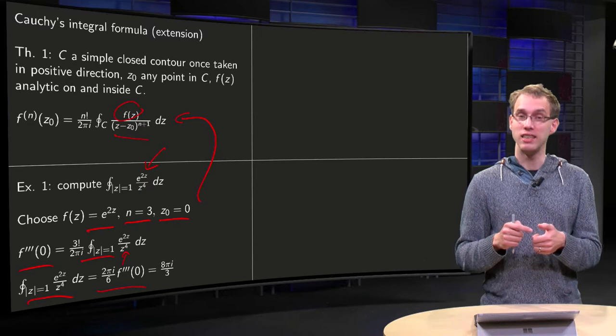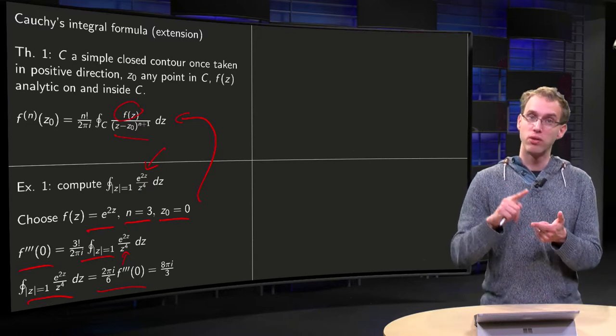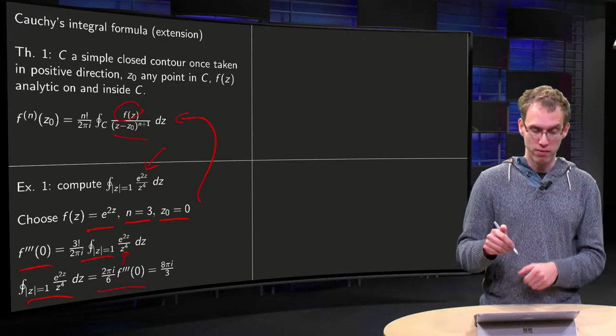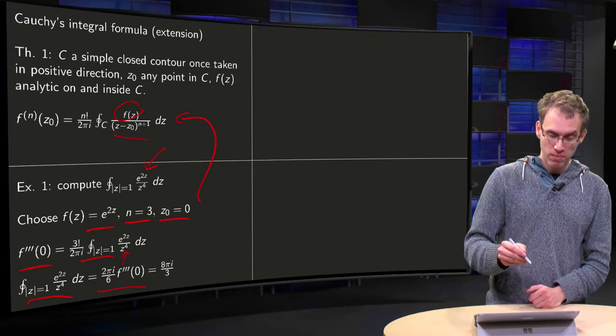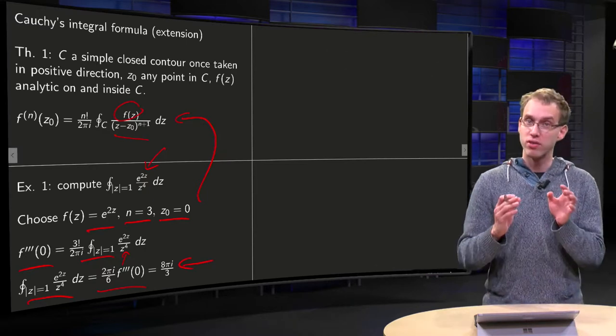so differentiating it is easy. The first derivative equals 2 times e to the power 2z, and then 4 times and 8 times e to the power 2z. Plug in 0 gives you 8, so you get, as your final answer for the integral, 8πi over 3.